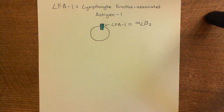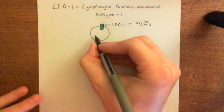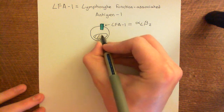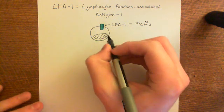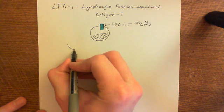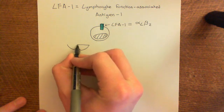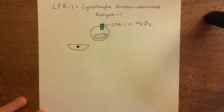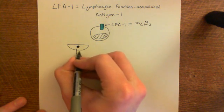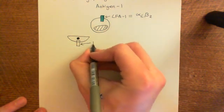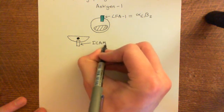LFA-1 forms a cell-cell interaction between activated endothelial cells and the monocyte. In the inflammatory response, if a pathogen is in the tissue, the endothelial cells of capillaries and post-capillary venules express a cell adhesion molecule on their surface that binds to LFA-1, called ICAM-1, which stands for intercellular adhesion molecule 1.